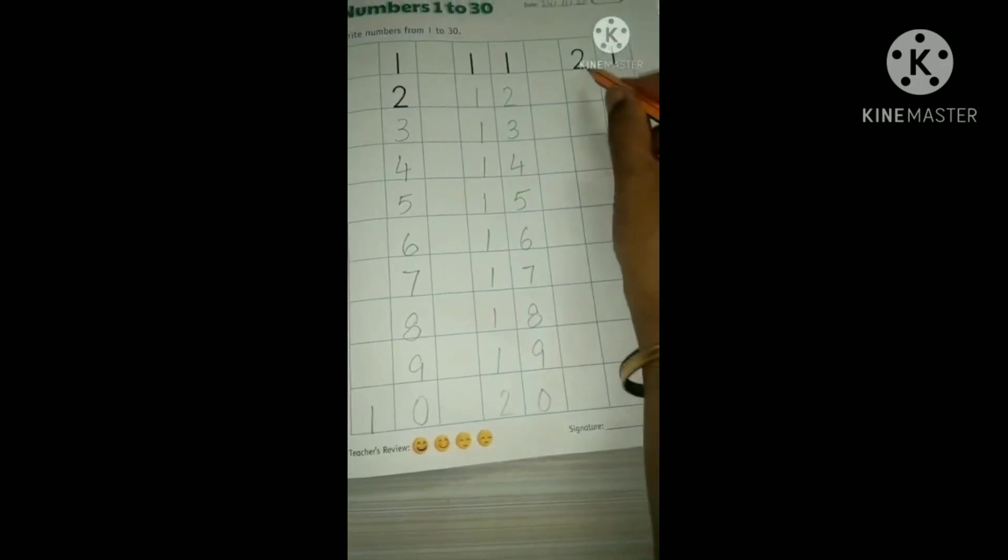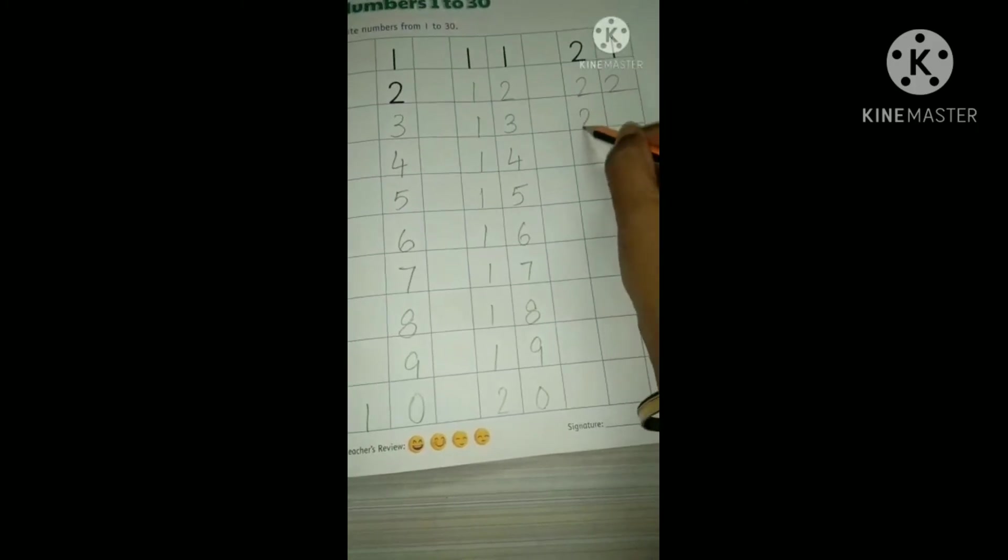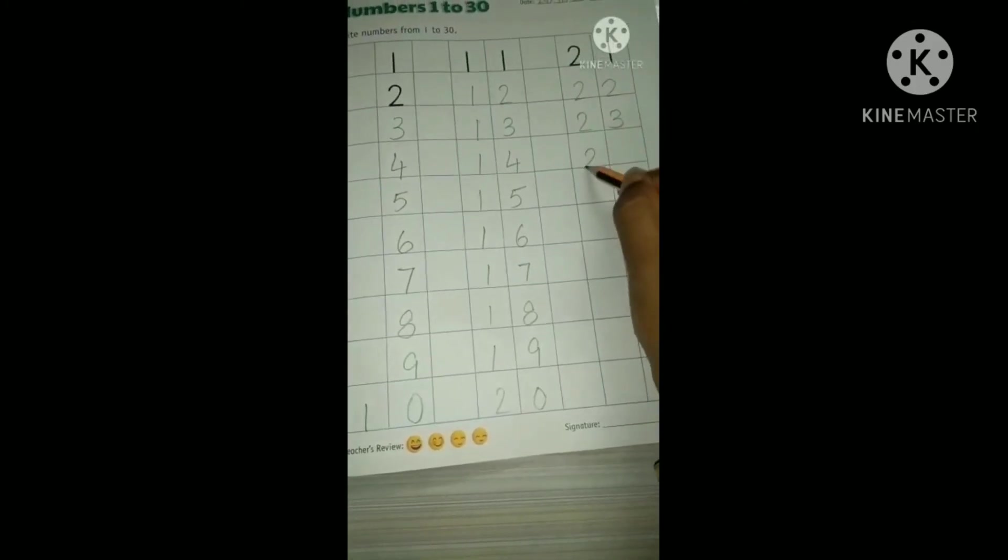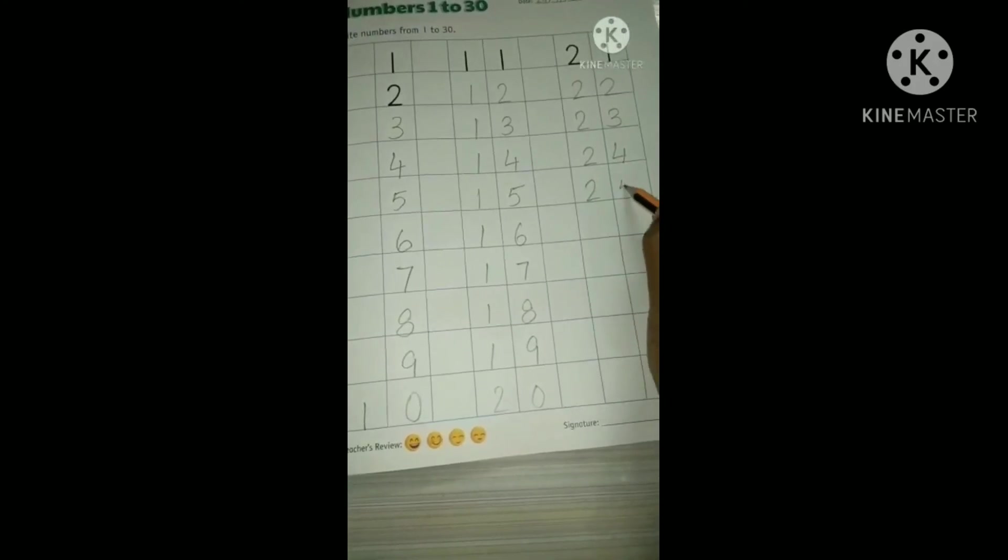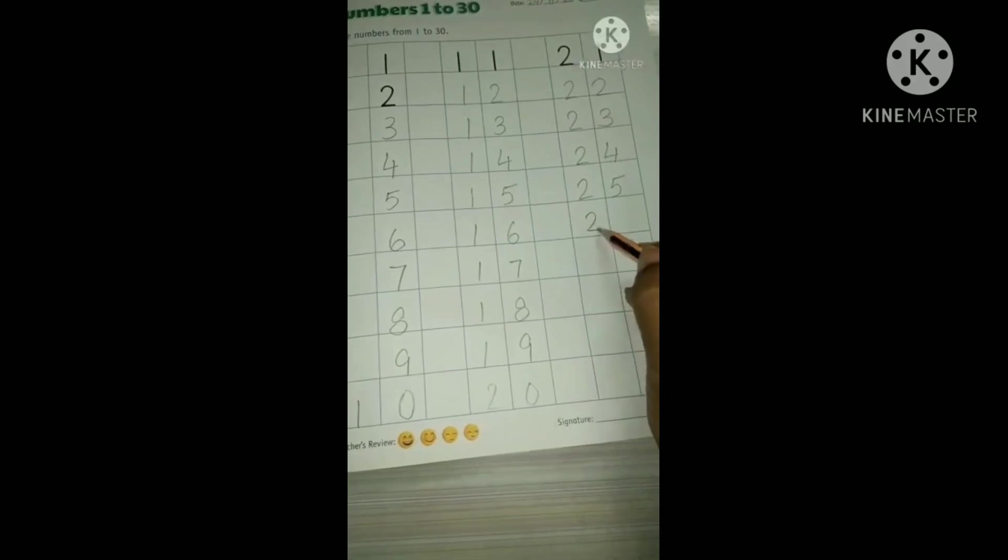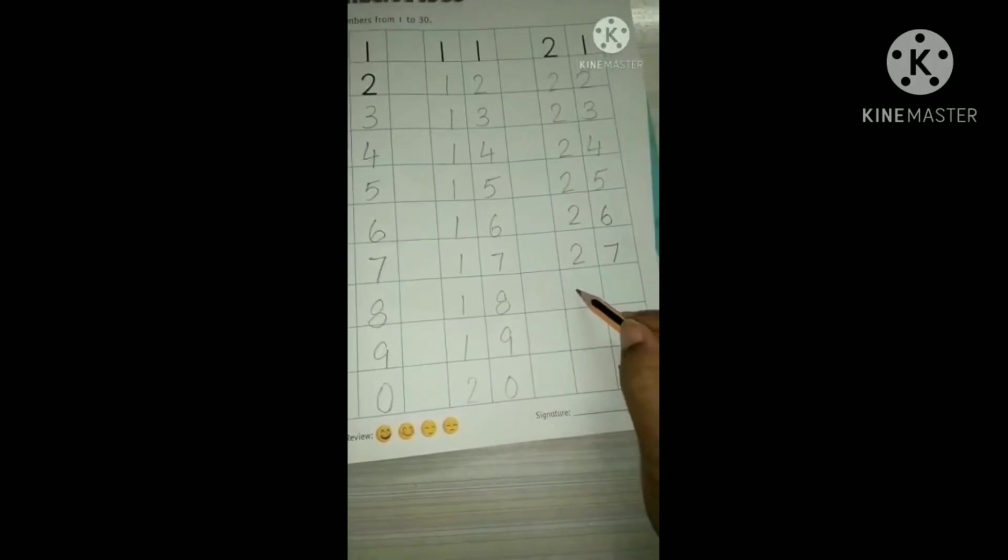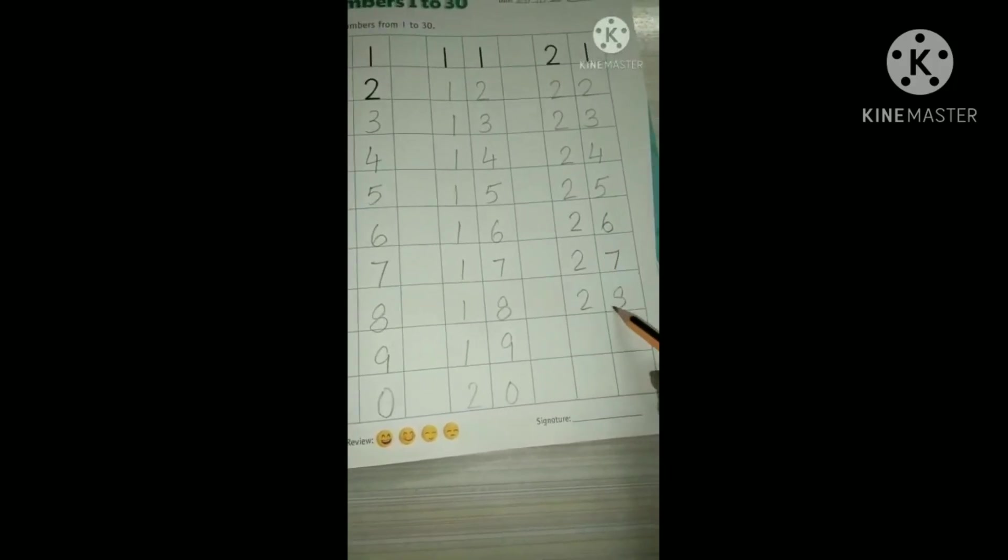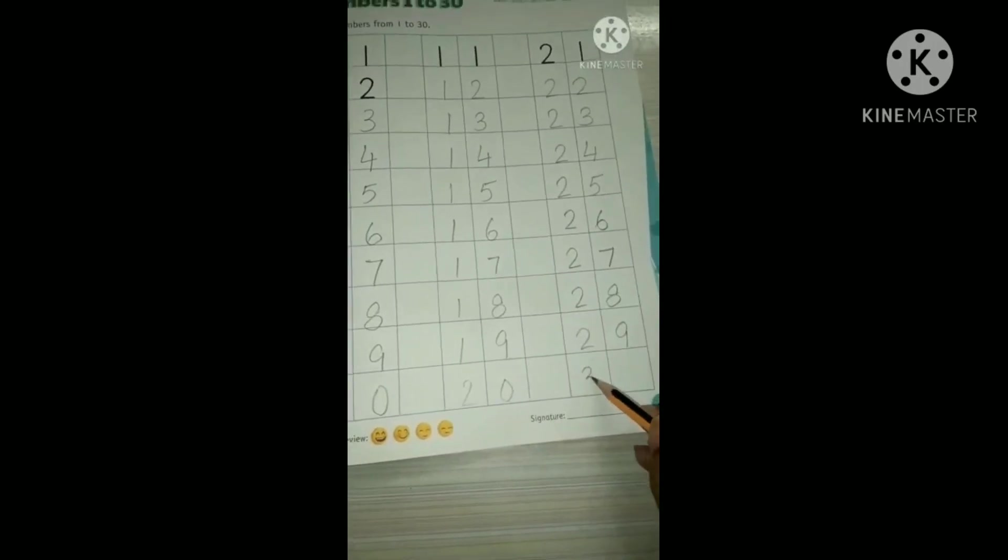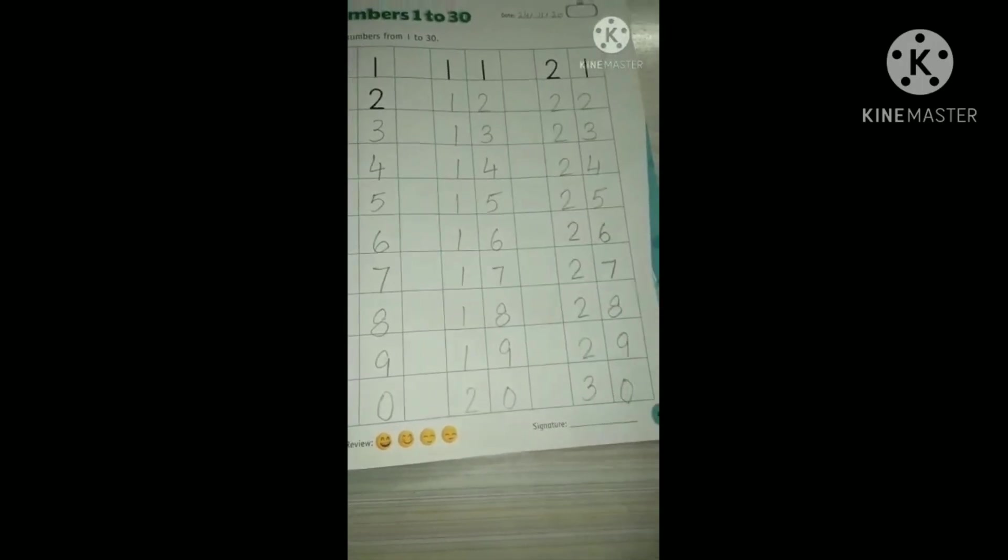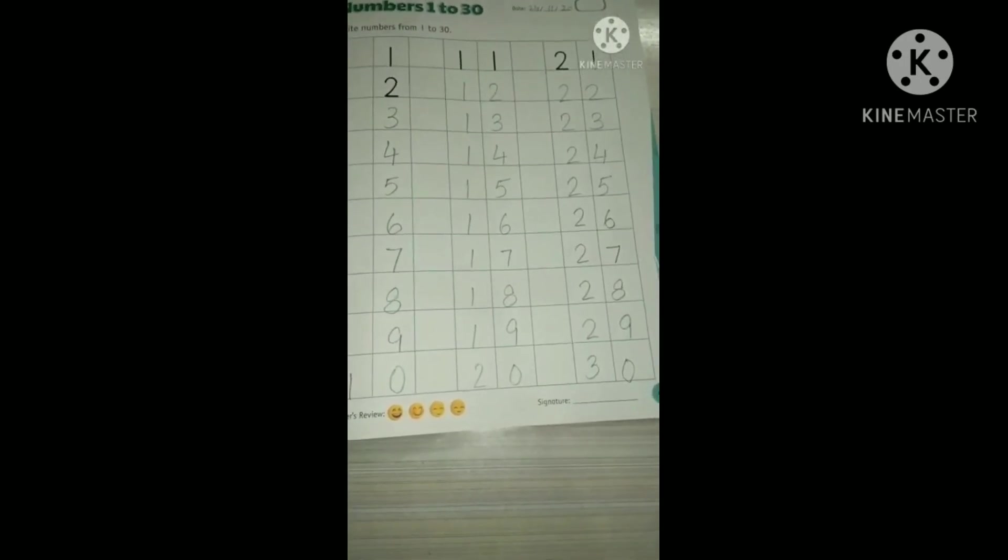2 tens 1, 1, 21. 2 tens 2, 1s, 22. 2 tens 3, 1s, 23. 2 tens 4, 1s, 24. 2 tens 5, 1s, 25. 2 tens 6, 1s, 26. 2 tens 7, 1s, 27. 2 tens 8, 1s, 28. 2 tens 9, 1s, 29. 3 tens 0, 1s, 30. So count in this way and write down all the numbers.